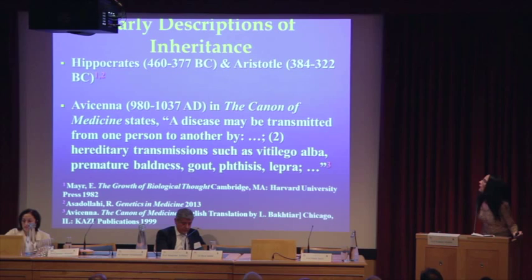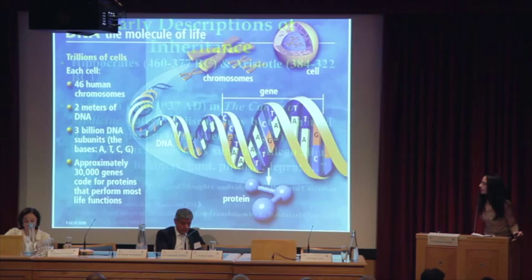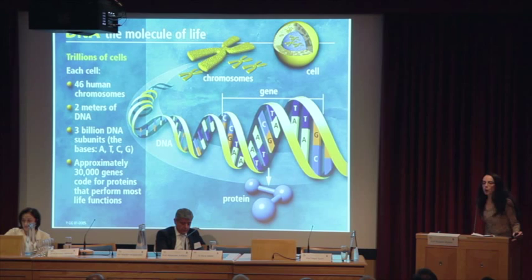These are not new concepts. Descriptions of inheritance existed from ancient times. Avicenna, in his Canon of Medicine, noted hereditary transmission as one mode by which a disease may be transmitted from one person to another. He named several diseases of the time which he believed had hereditary components.